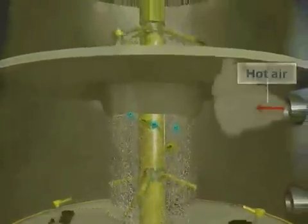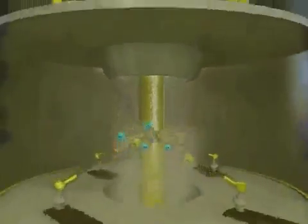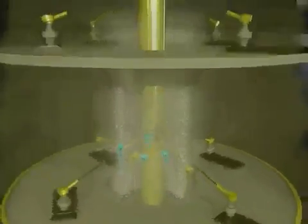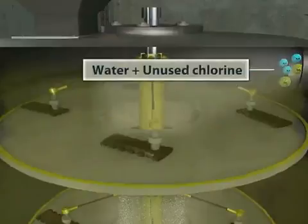To remove water, which is the by-product of the reaction, a current of hot air is introduced in the tower through the other inlet. The hot air dries away the water as vapor along with unreacted chlorine from the outlet at the top of the tower.